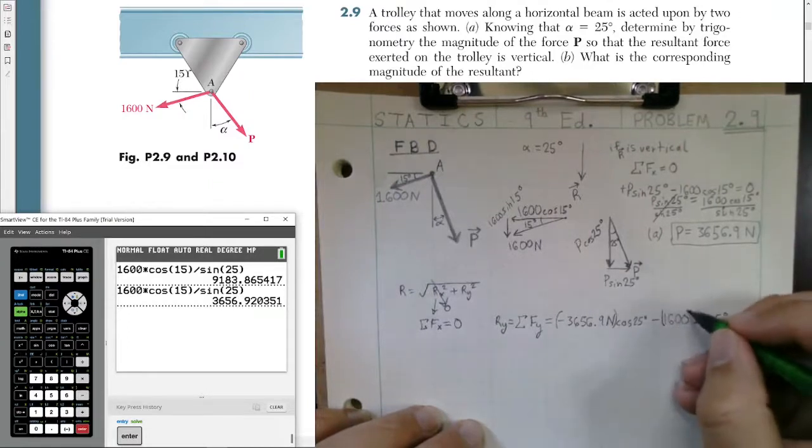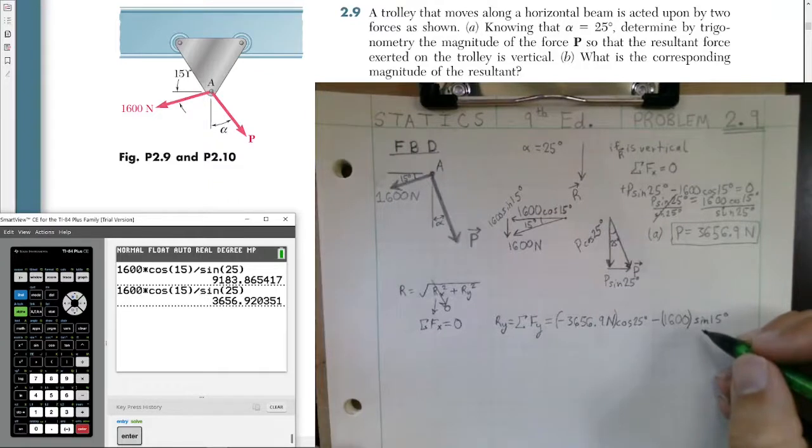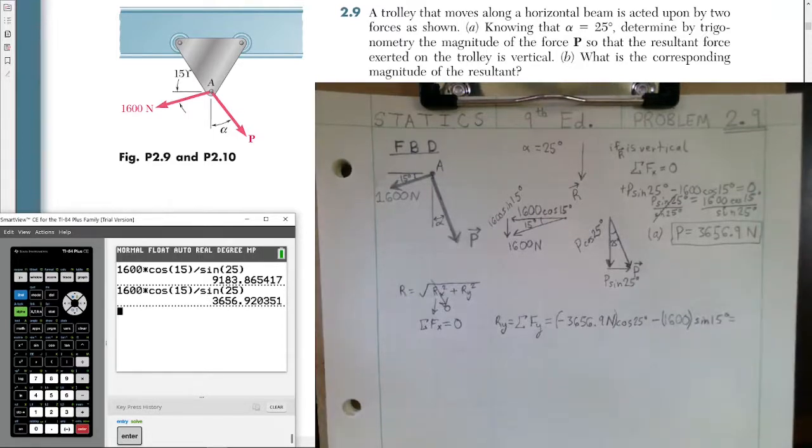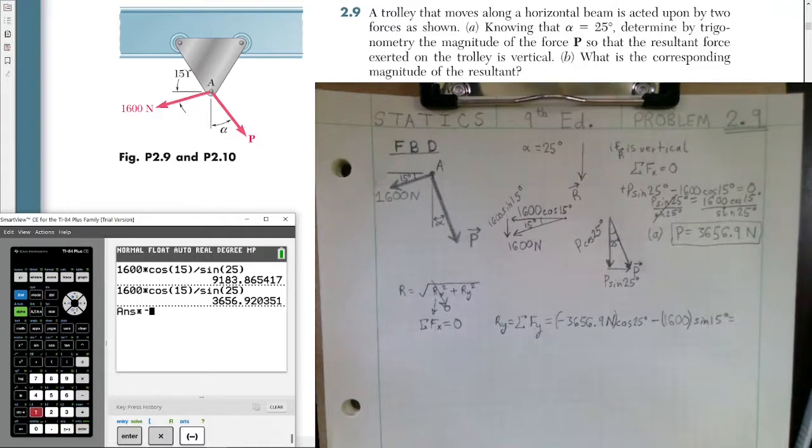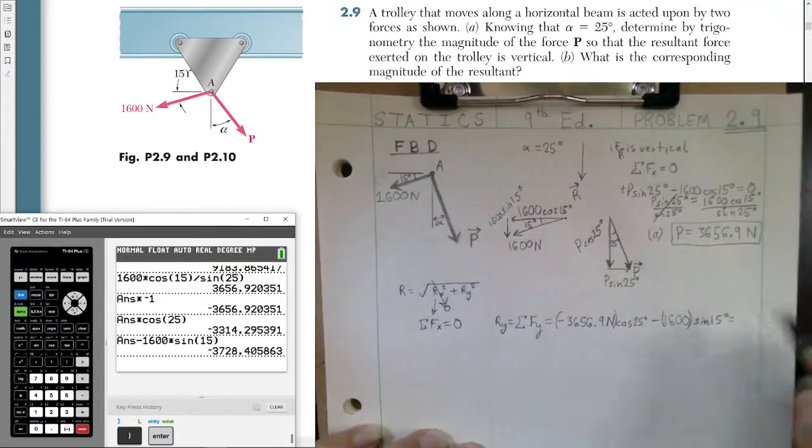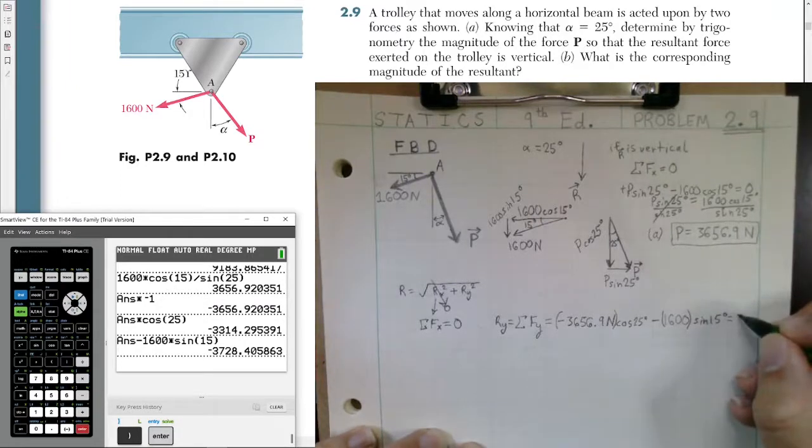So we multiply these magnitudes by their horizontal and vertical components. We're doing the vertical right now. And we get our resultant force in the y. So we have our answer we just found. I'm going to make that negative. So times negative 1, then times the cosine of 25 degrees. I'm going to now subtract 1,600 multiplied by the sine of 15 degrees. Now, my answer for the resultant in the y is negative 3,728.4 newtons.